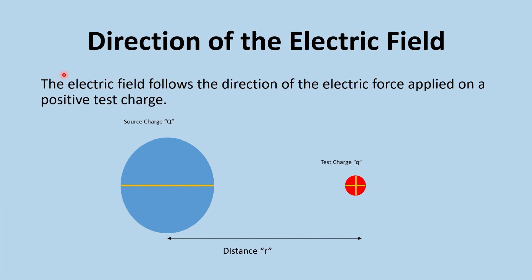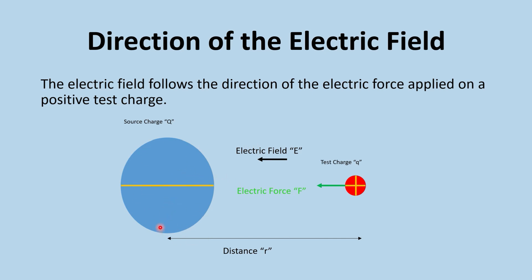Now if the source charge is negatively charged, we apply the same rule. A negatively charged source attracts the positive test charge, so the electric force on the test charge points toward the source. Following the rule, the electric field points in the same direction as that force. Regardless of the polarity of the source, we always check the direction of force on the positive test charge — the electric field follows that direction.